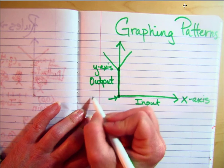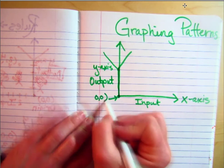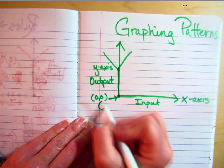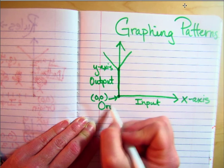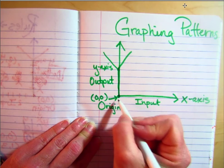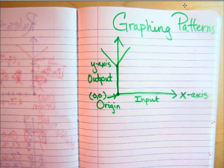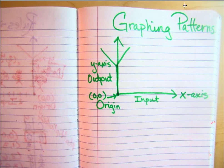This point right here is zero, zero. This is your origin. You need to know this point and what it's called. So when we're graphing a pattern,